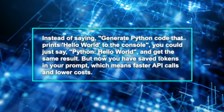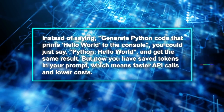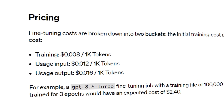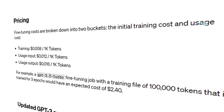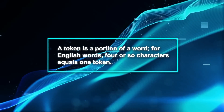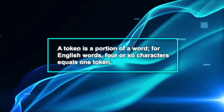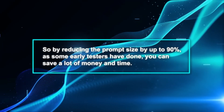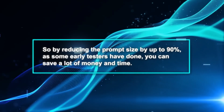But now you have saved tokens in your prompt, which means faster API calls and lower costs. OpenAI charges users for the amount of tokens they process in the input prompt as well as the output. A token is a portion of a word — for English words, four or so characters equals one token. So by reducing the prompt size by up to 90%, as some early testers have done, you can save a lot of money and time.